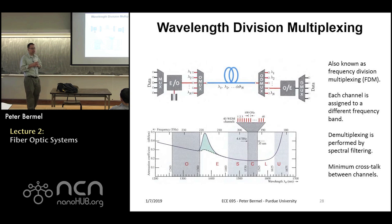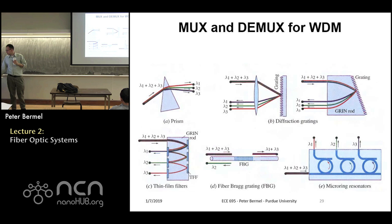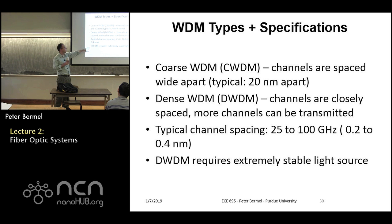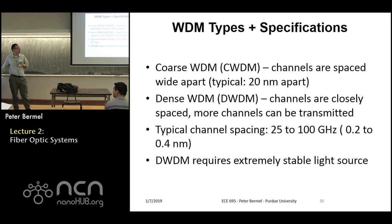Typical WDM channel spacing is 100 GHz but can be as small as 25 GHz. The light source must be extremely stable for tight spacing to work — wavelength instability causes huge crosstalk between channels. There are also techniques for adding and dropping signals in WDM networks, which will be covered next time. Thank you for coming.